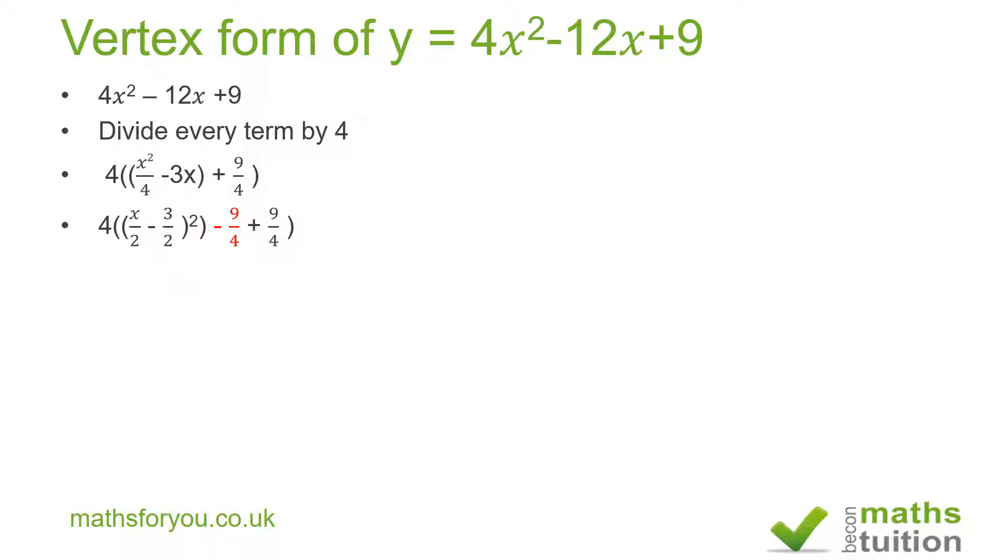Okay, hope I'm making sense. In this instance here, -9/4 + 9/4 will give us 0, so we end up with the vertex form being 4(x/2 - 3/2)² + 0.